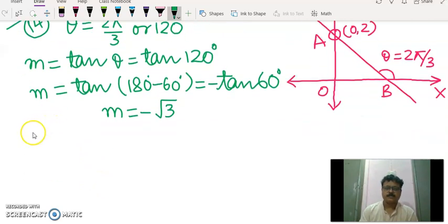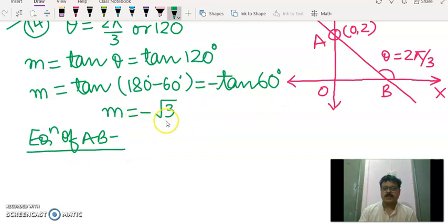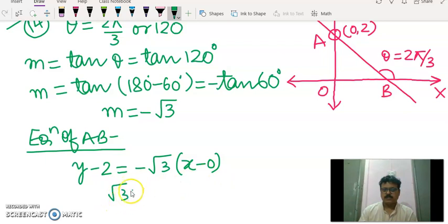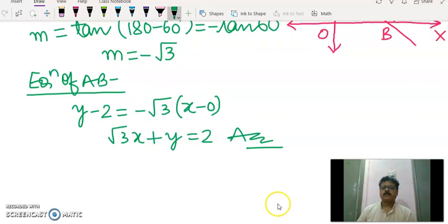Now we have to find the equation of AB. Since AB is a line which is passing through 0 comma 2 and has a slope minus root 3. So as per the point slope form it says y minus y1 is equal to m into x minus x1. So root 3x plus y is equal to 2 is the answer. Correct.